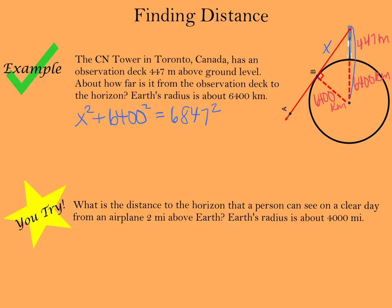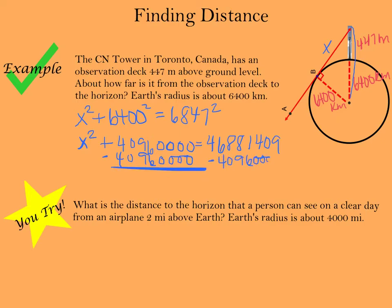So these are going to be some big values. I've got x squared plus 6,400 squared is 40,960,000. And 6,847 squared is 46,881,409. So now to solve, I'm going to subtract. Good thing we have calculators, huh? I'm left with x squared equals that thing minus that thing, 5,921,409. Square root of that, I get that x equals 2,433.09454.